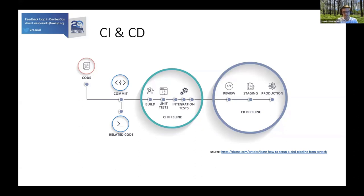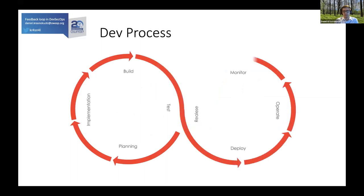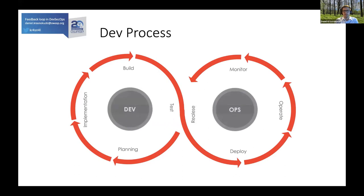Normally CI and CD should be two different steps, mostly because the deployment part needs a lot of credentials and access, while the building part does not. So you should probably separate those two. There are different security tests that can be done in those steps. But let me go through the dev process first. DevOps, as I said, it's not a process - it's a culture. You need to think and work like DevOps.